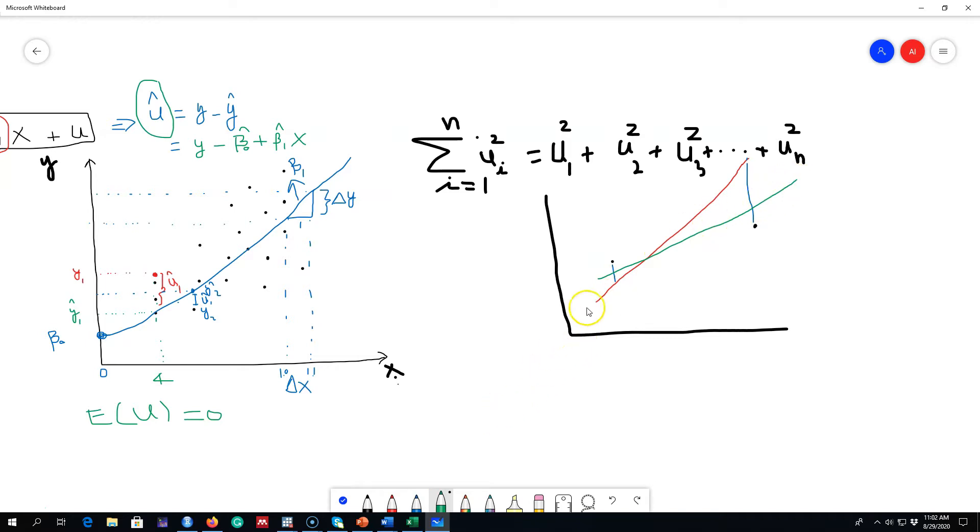And as you can see this green line is a little bit better because the distance between the predicted value and the actual value is much closer as compared with this red line. And this is exactly what we are trying to do using these ui squares. We are trying to minimize the distance between our predicted value and the actual value.